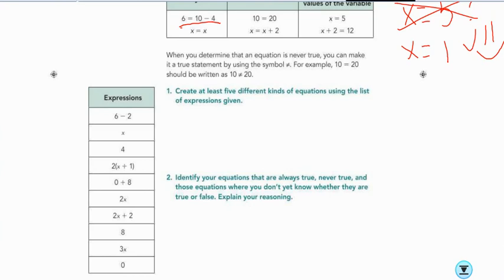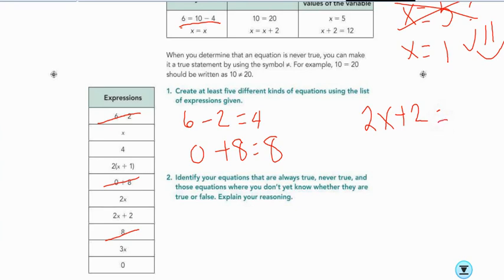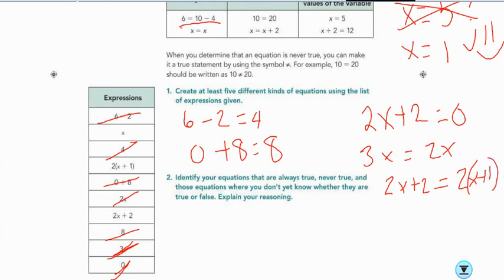Write at least five different kinds of equations using the list of expressions given. So, let's look. I have 6 minus 2 equals 4. So, that is a true equation. Then I could have 0 plus 8 equals 8. So, that's the identity property. And then I could have 2x plus 2 could be equal to 0. Sometimes. Sometimes not. Then I could have 3x could be equal to 2x. That could be sometimes true. If x was 0, then there'd be 3 times 0 equals 2 times 0, which is also 0. Then I could have 2x plus 2 could be equal to 2 times x plus 1. And this is going to be always true, because if you distribute, they're equivalent.